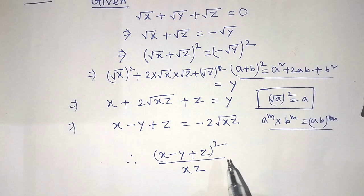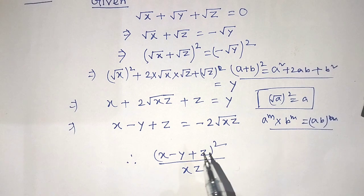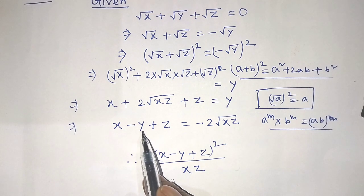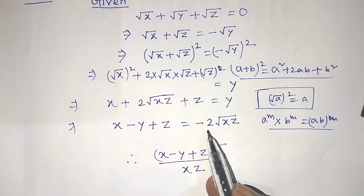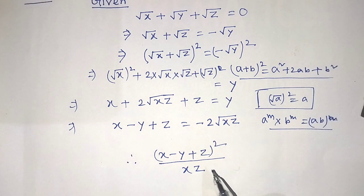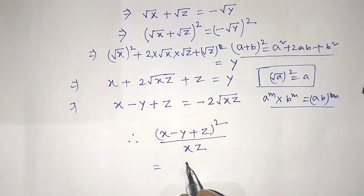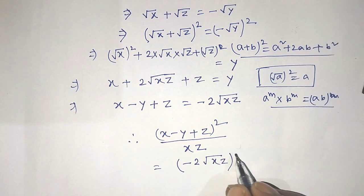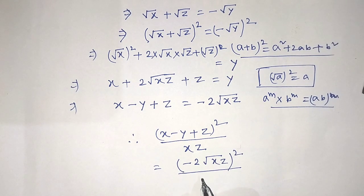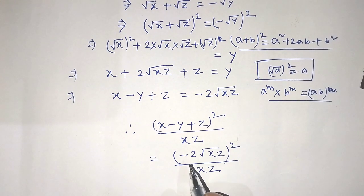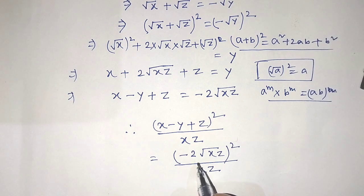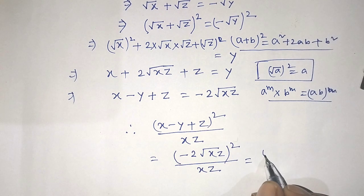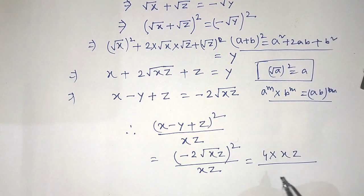To find the value of this algebraic expression, we substitute x minus y plus z equals minus 2 root of xz into the expression. So we can write: (minus 2 root of xz) whole to the power 2, over xz in the denominator. The square of minus 2 into root of xz gives us 4 into xz, and in the denominator we again write xz.